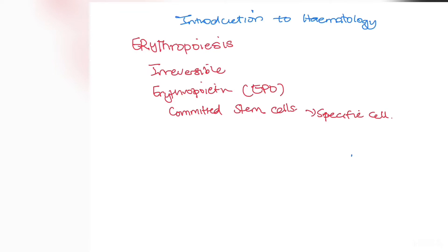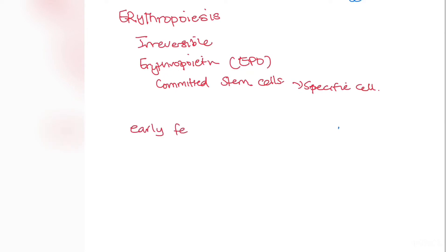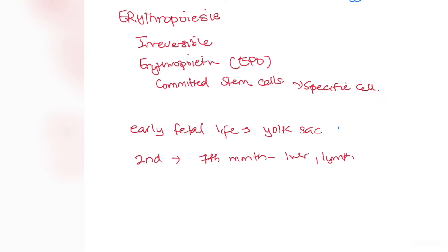The production of red blood cells occurs at different sites depending on life stage. In early fetal life — before the second month of pregnancy — the major site is the yolk sac. From the second through the seventh month, the liver, lymph nodes, and spleen become the major sites of erythropoiesis. These organs continue producing red blood cells until about two weeks after birth, though they are no longer the primary sites.